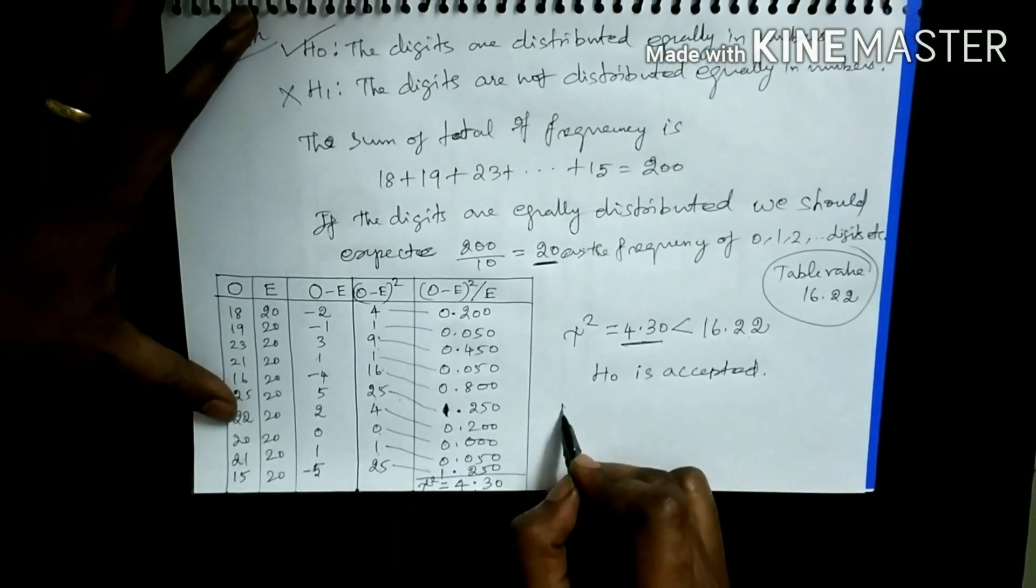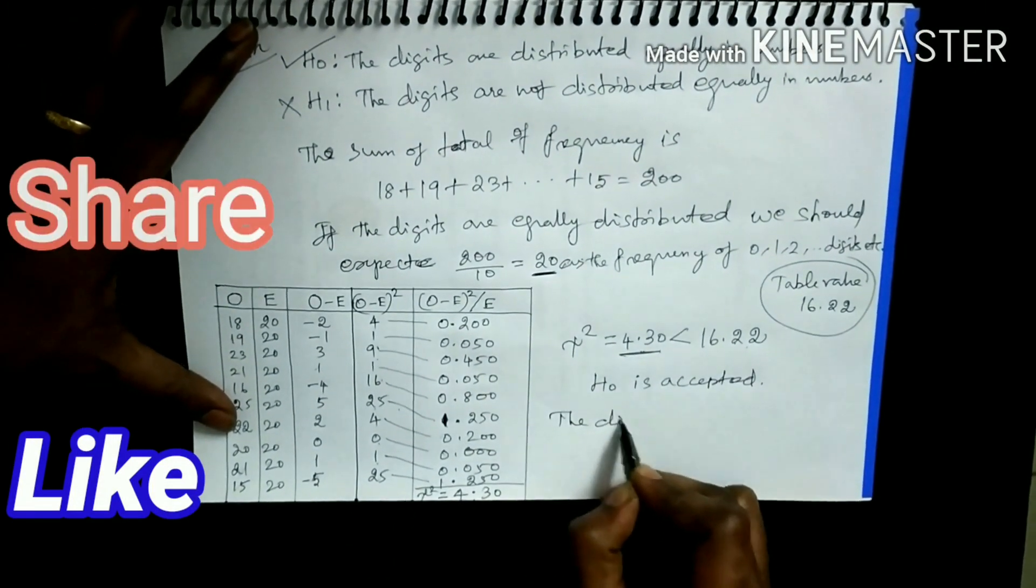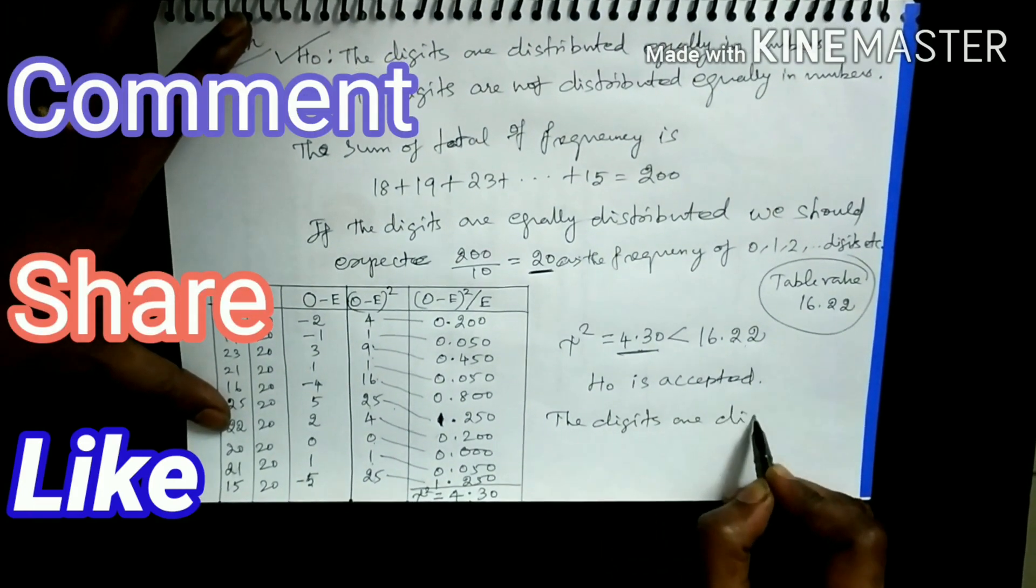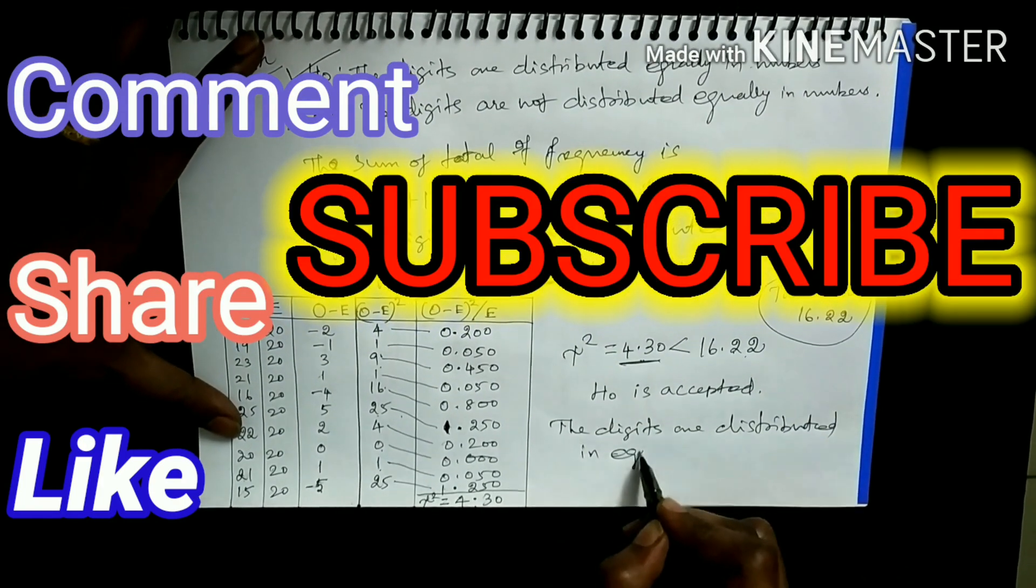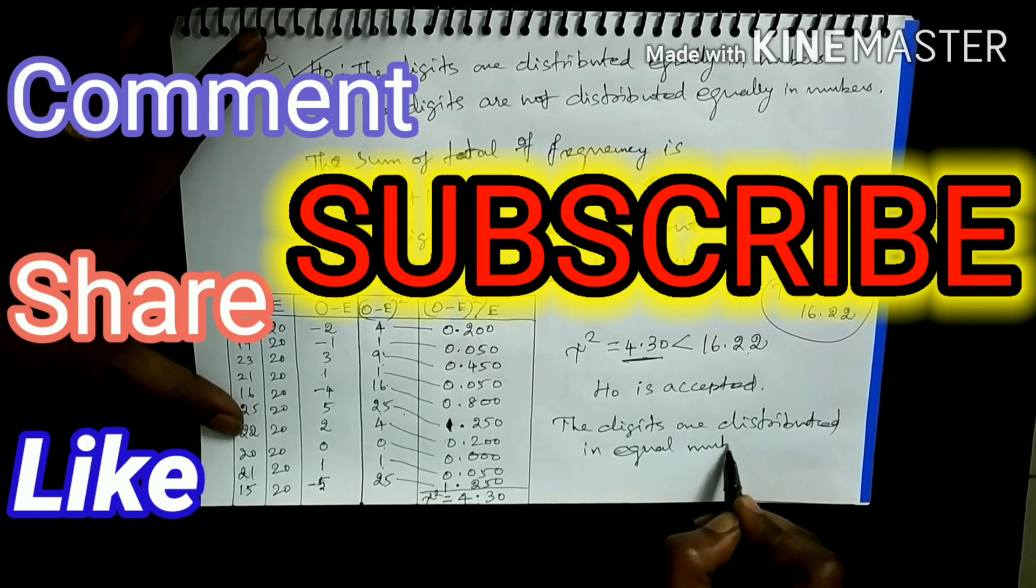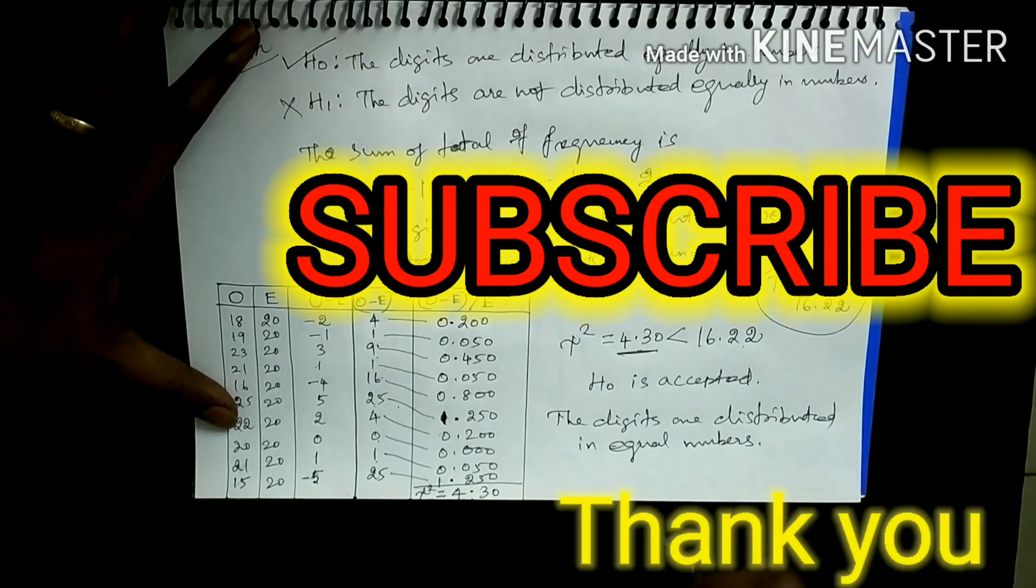The conclusion is, yes, the digits are distributed in equal numbers. This is the conclusion. Thank you.